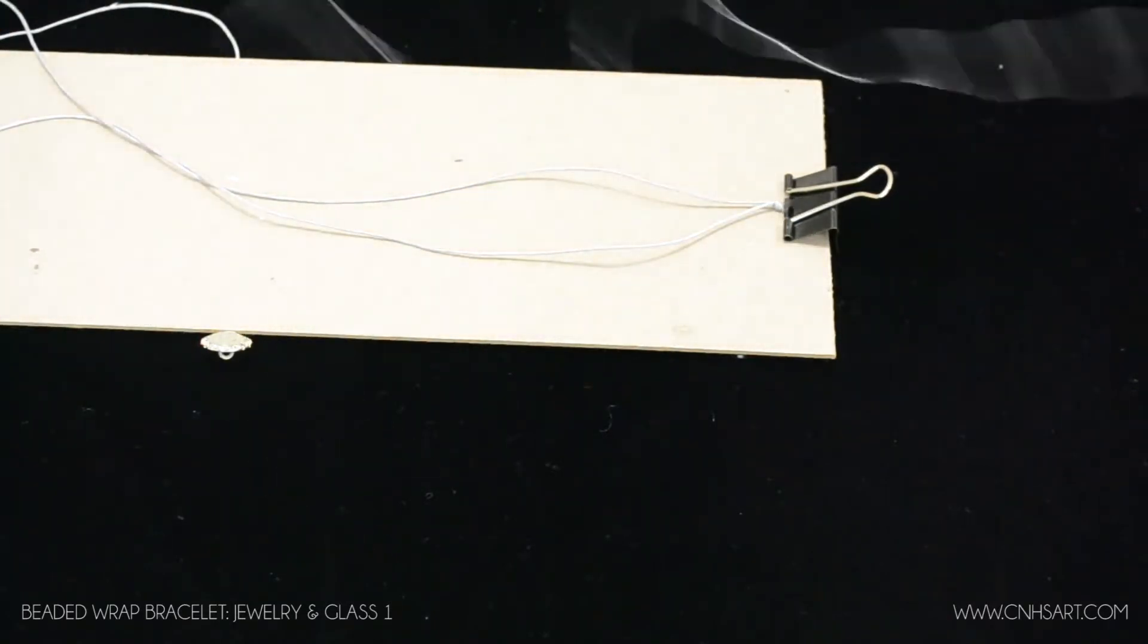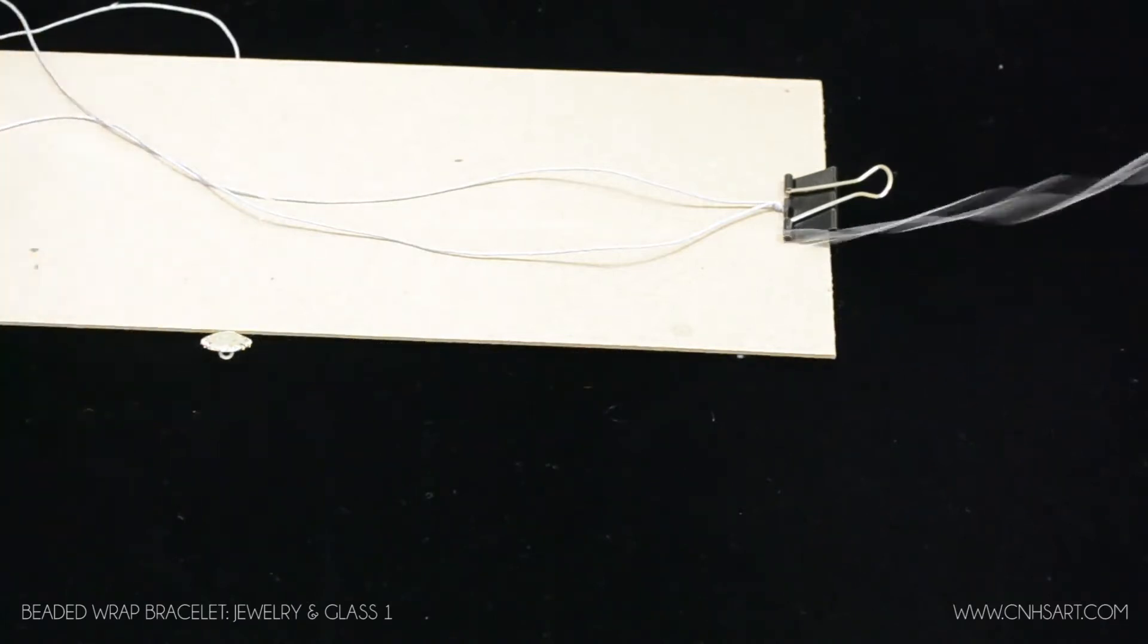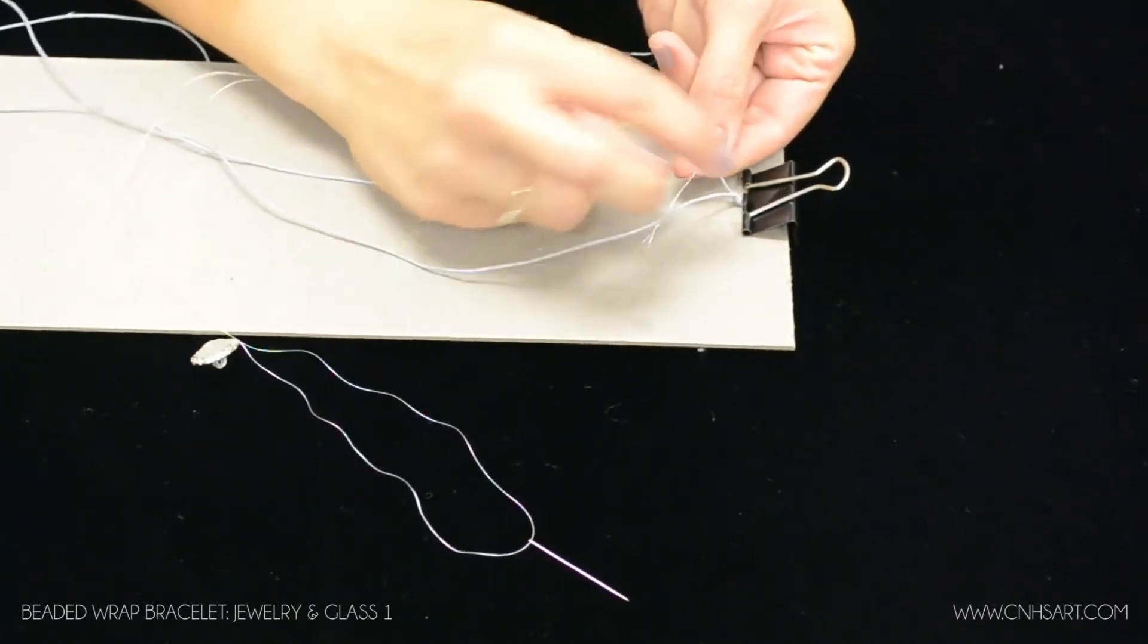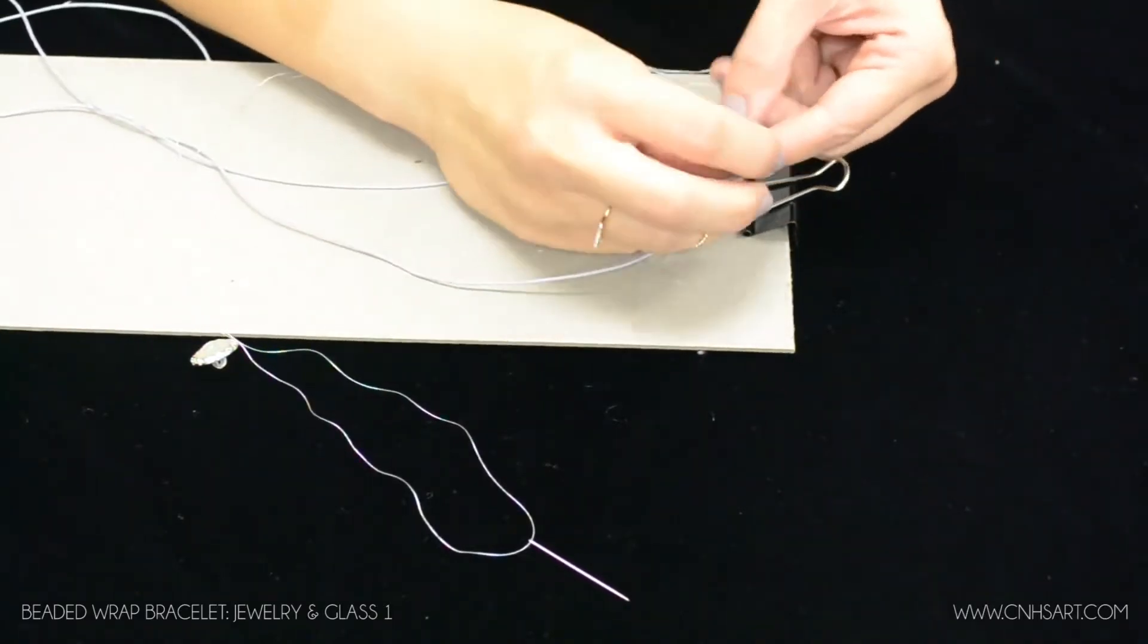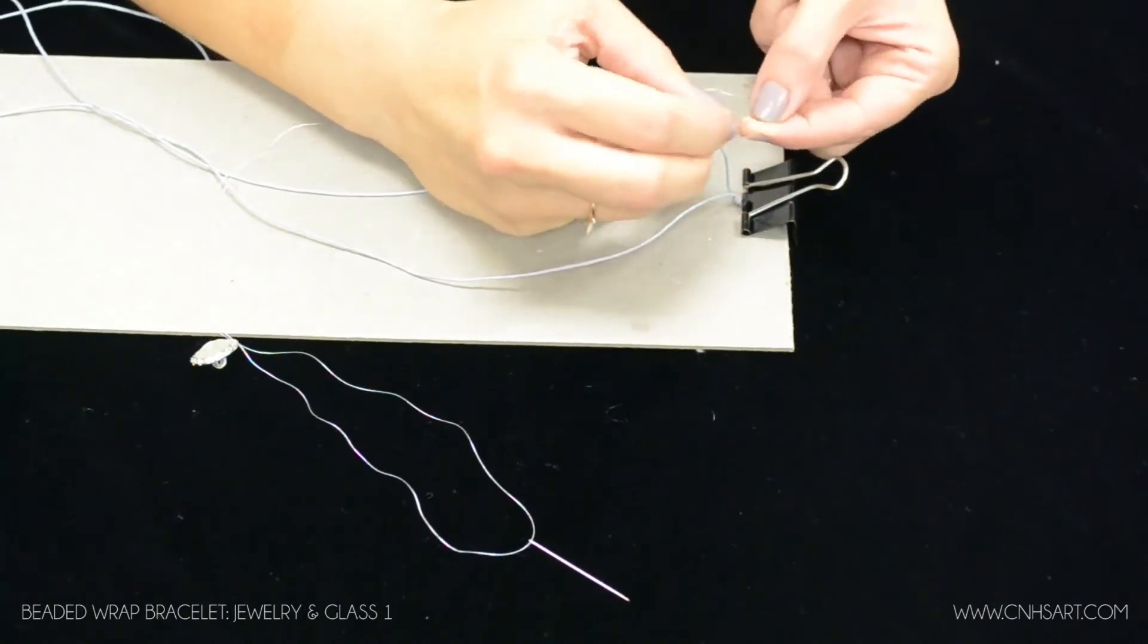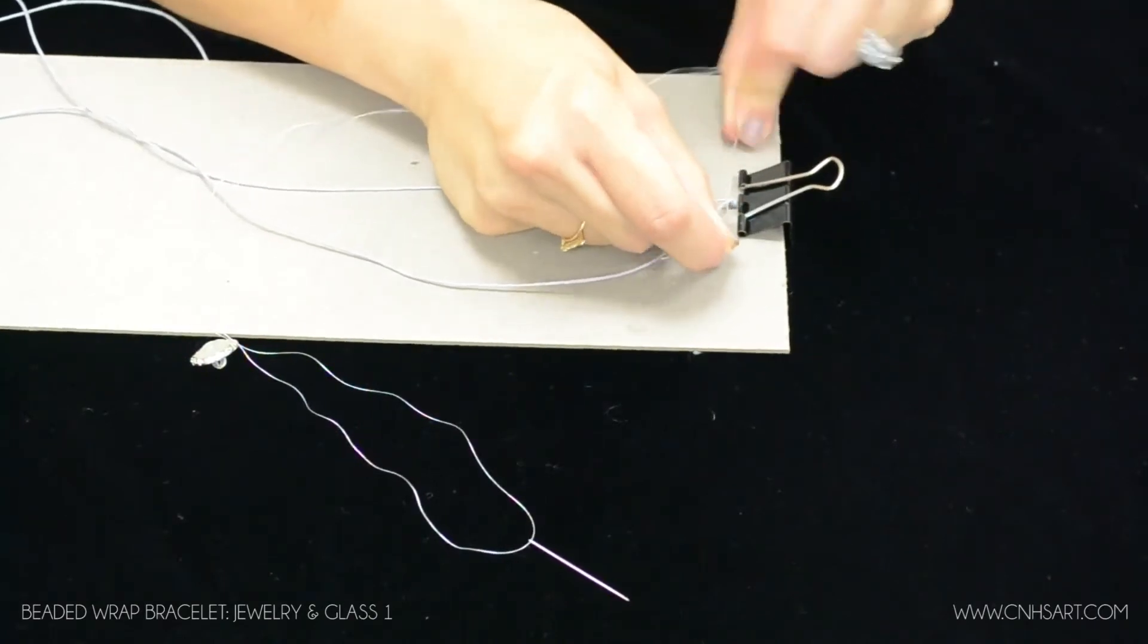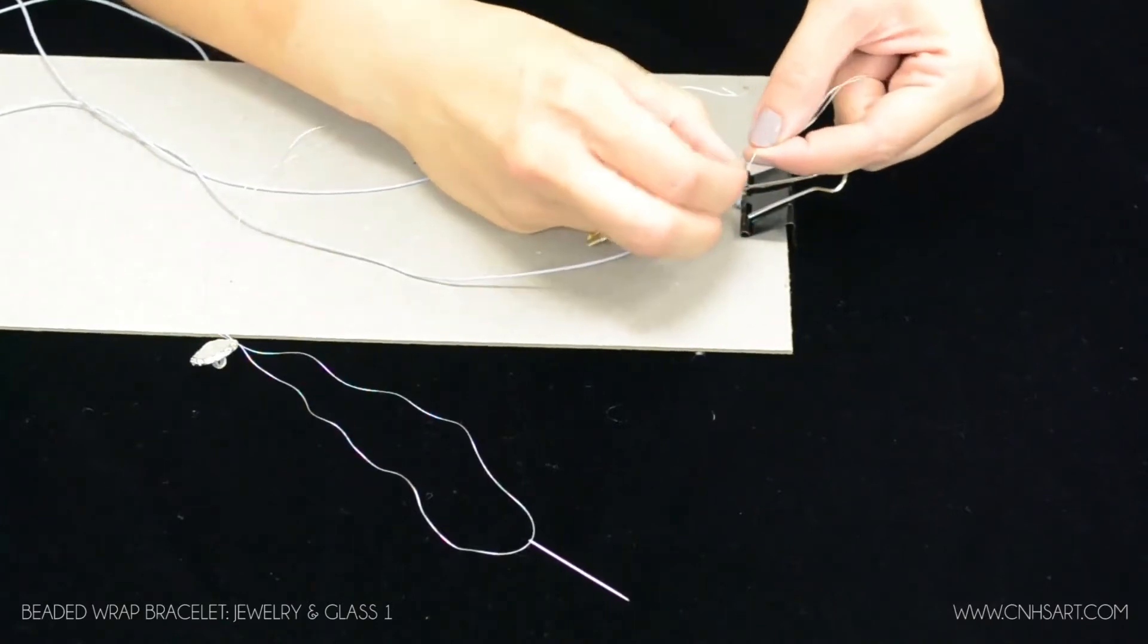Just thread it there and then what you're going to do from here is take the two ends together hold them like they're one piece and tie them on to the left side of your cord and you want to make sure that when you tie it you tie these so that the knot is just below the knot in the cord. So I'm going to tie it one more time.